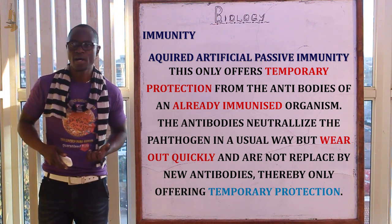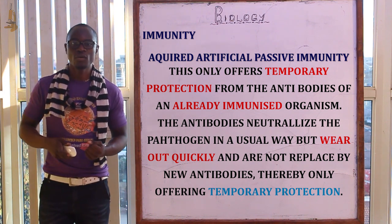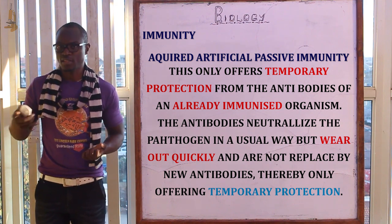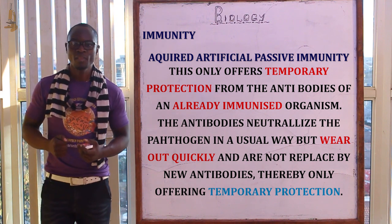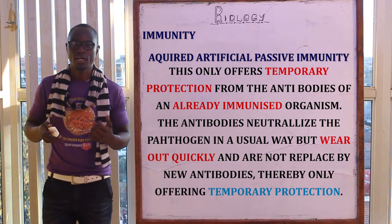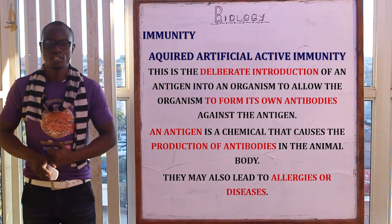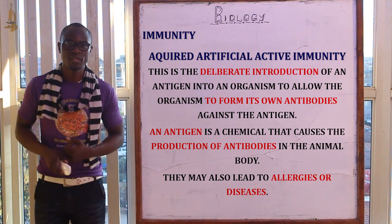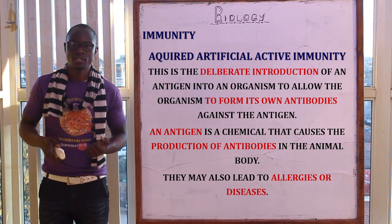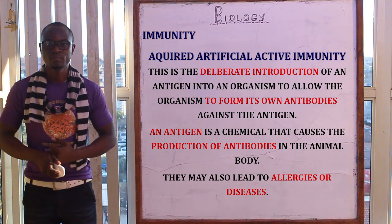Acquired artificial passive immunity is a temporary protection obtained from the antibodies of an already immunized organism introduced into another organism. The blood of the already immunized organism is implanted into an unimmunized organism, allowing the new organism to develop antibodies to fight the disease. Acquired artificial active immunity is the deliberate introduction of an antigen into the body of an organism to allow the organism to form its own antibodies, essentially being injected with the disease so your body can produce antibodies against the harmful microorganisms.